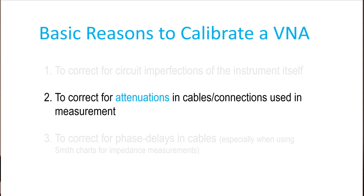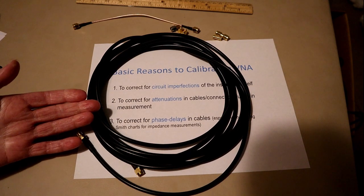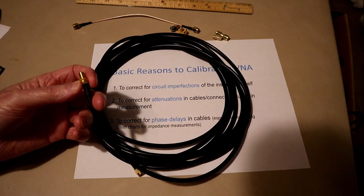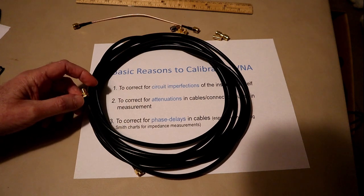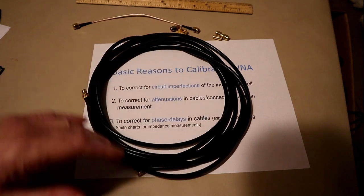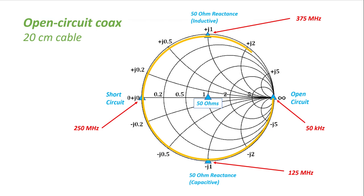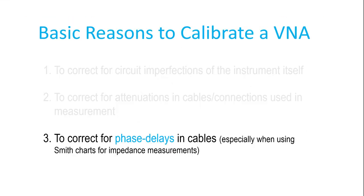A second reason is to correct for attenuation in cables and connections used in the measurement. So for example, here is a five meter cable. This five meter cable at the higher frequency end of the range has enough loss that we need to correct for the attenuation, maybe several dB. And last but not least, especially when we're using Smith charts for measuring impedance, we need to correct for phase delays in cables.